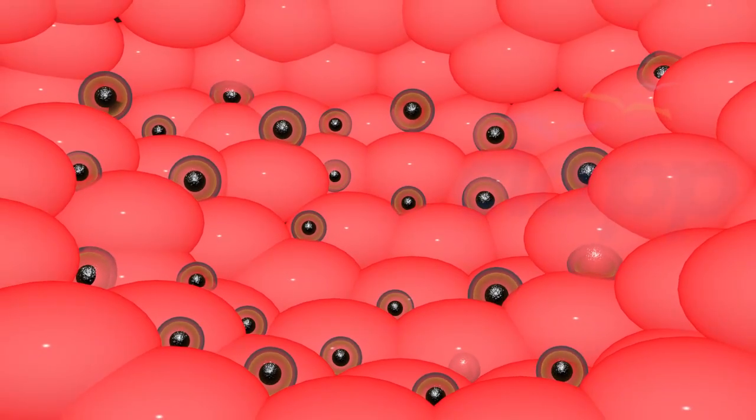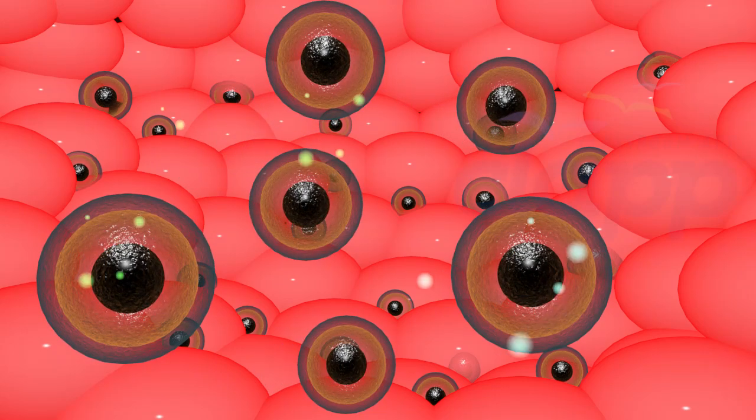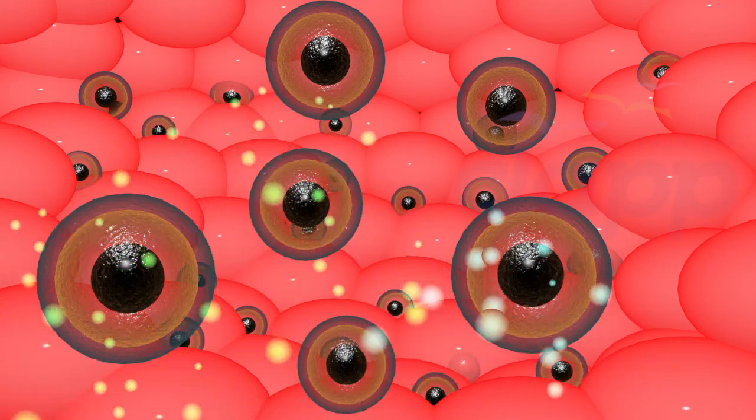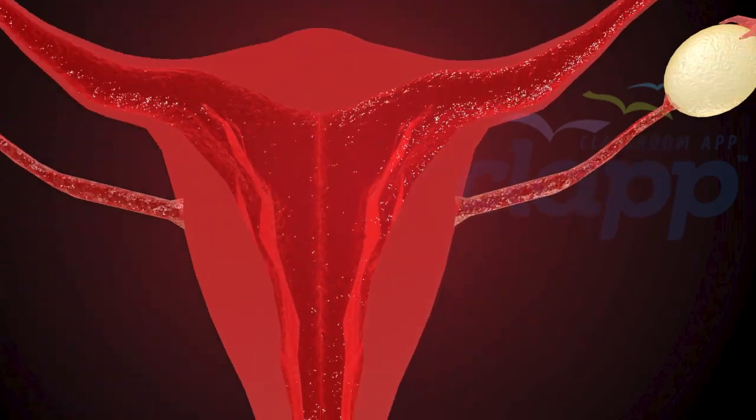These hormones cause about 6 to 12 follicles to awaken and start to mature. As they mature, they release estrogen hormone and cause the lining of the uterus to begin to build up.